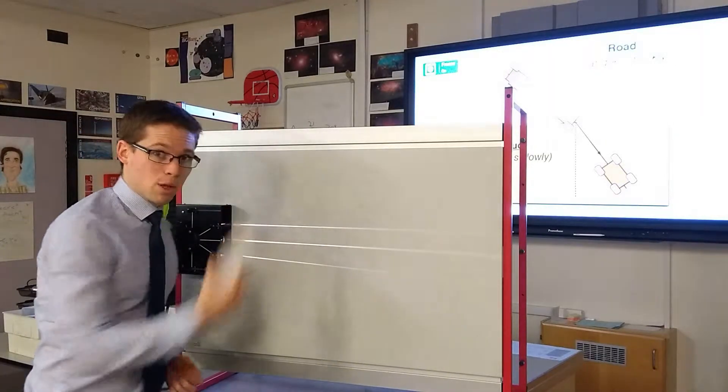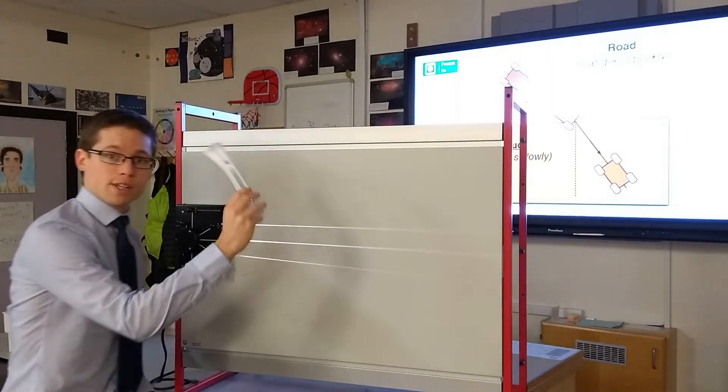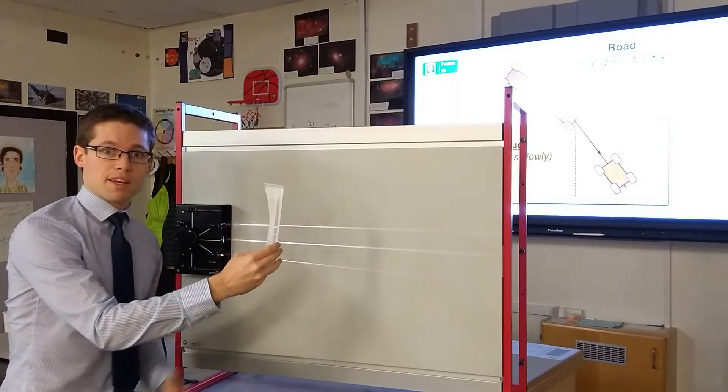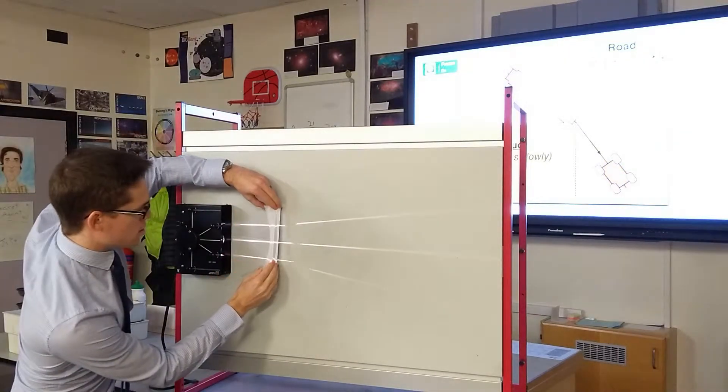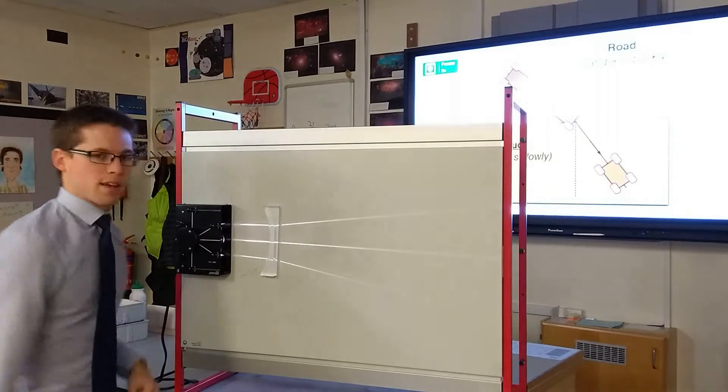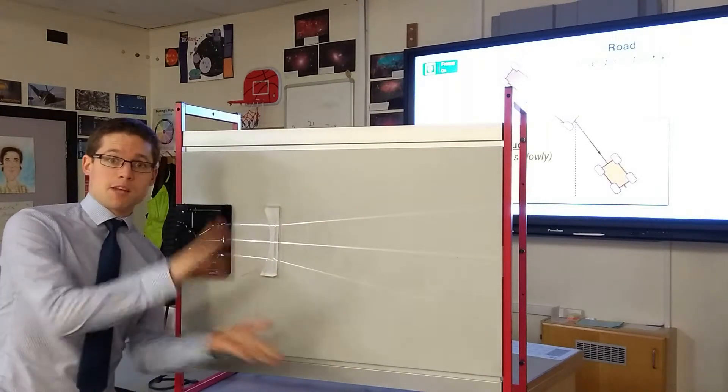You could apply the same logic to a concave lens, which looks a bit like a cave, and you would get the opposite effect. The light rays diverge.